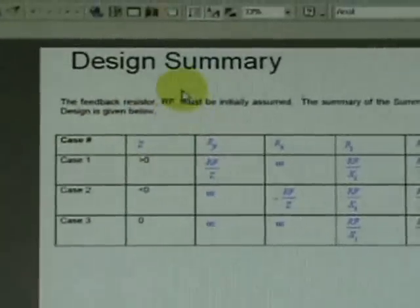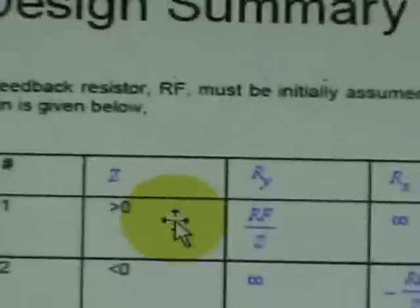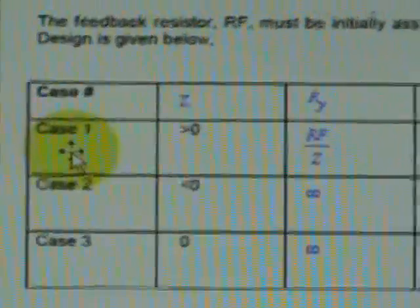Initially, a suitable feedback resistance or RF needs to be assumed first. Then based on the value of Z, if it is strictly positive as case 1, if it is strictly negative case 2, if it is exactly 0 case 3.